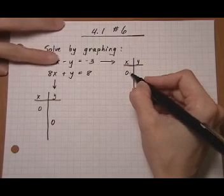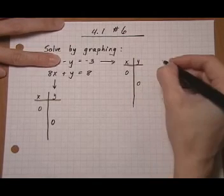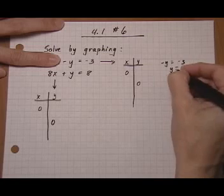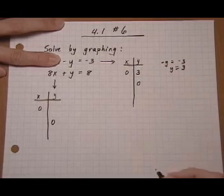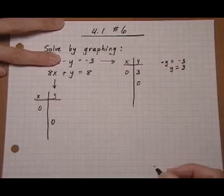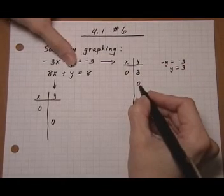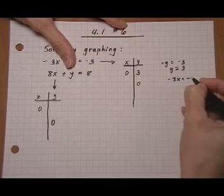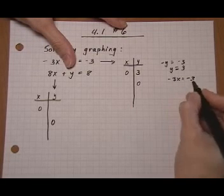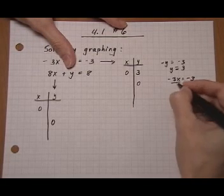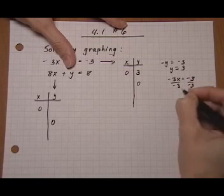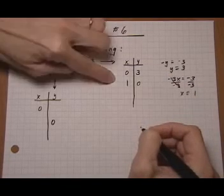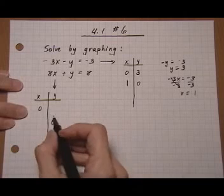If x is zero in the first equation, that term goes away. And I'm left with minus y equals minus three. Divide both sides by negative, I get y is three. Zero, three is our first point. If y is zero on the first equation, that term goes away. I'm left with minus three x equals minus three. Divide both sides by negative three, x equals one. So there's our two points for the first one. So we're finding the intercepts here.